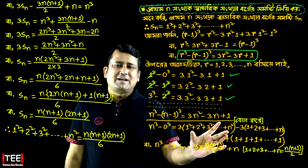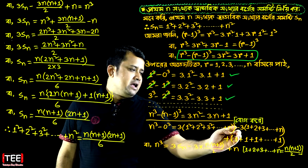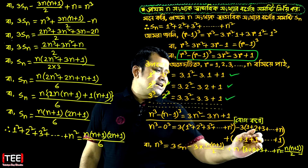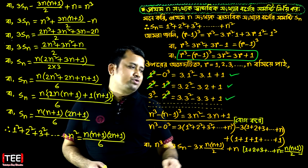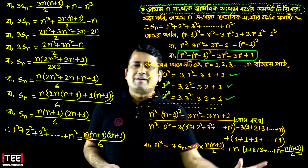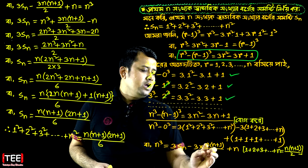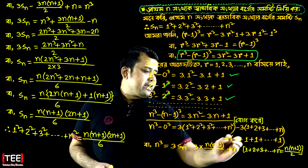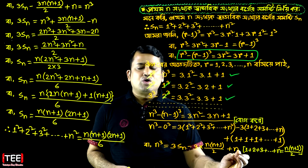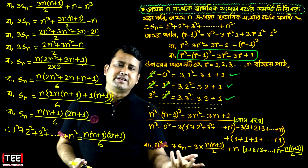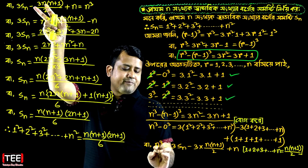So 1 squared plus 2 squared plus 3 squared plus dot dot dot plus n squared. This is the same as Sₙ. So we write: n cubed equals 3·Sₙ minus 3 times the sum 1 plus 2 plus 3 plus dot dot dot plus n. We know the first n natural numbers sum to n(n+1)/2. And the sum of n ones is simply n.